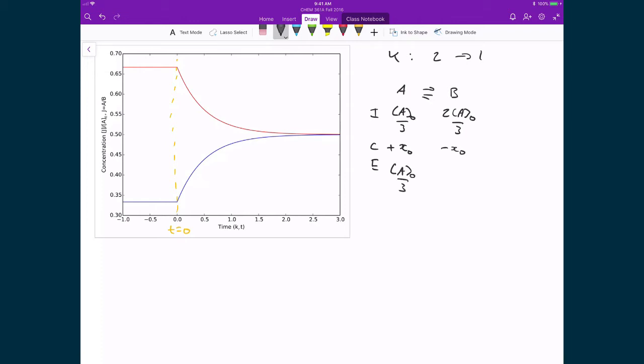And so at equilibrium we have A0 over 3 plus X0, and for B it's 2A0 over 3 minus X0. And that's something that's plotted here on the left-hand side, where in red I've got my concentration of B, and in blue I have my concentration of A. We can see that my B decreases and my A increases, which is reflected in my equilibrium constant K going from 2 to 1, meaning we expect the reactants to get bigger and the products to get smaller as my rate constant decreases.